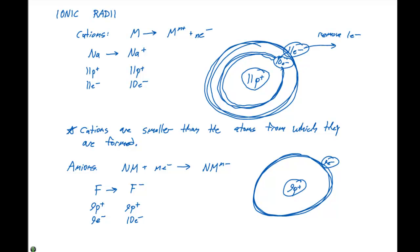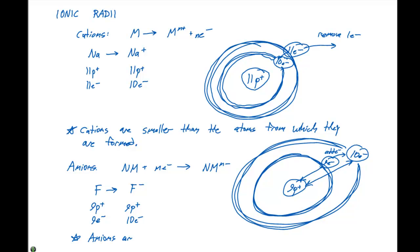When we add that electron, we now have ten electrons surrounding the nucleus, and there are nine protons. So this tug of war that we previously looked at for the cation is going to be a little bit different. We're adding electrons, so those nine protons can't pull as strong as they do when we have nine electrons versus ten electrons. So the general trend we can say here is that anions are larger than the atoms from which they are formed.